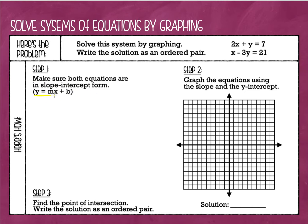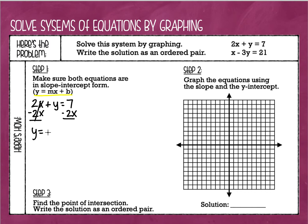Both of our equations have to be solved for y. Our first equation is 2x plus y equals 7. To put this in slope-intercept form, I'm going to subtract 2x from each side, and that gives me y equals negative 2x plus 7. Our second equation is x minus 3y equals 21.